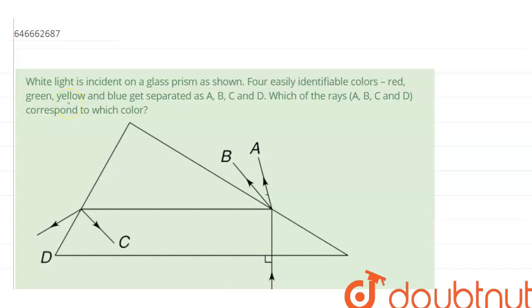White light is incident on a glass prism as shown. Four easily identifiable colours, red, green, yellow and blue get separated as A, B, C and D. Which of the rays A, B, C and D correspond to which colour?